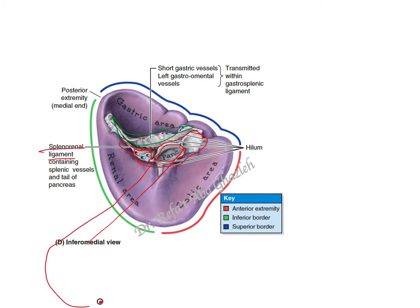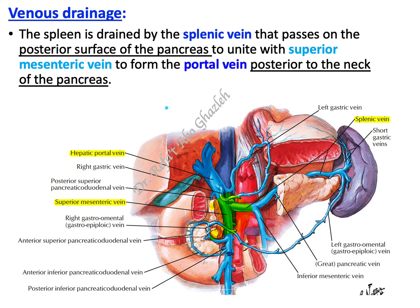This is the tail of the pancreas, this is the body, and so forth. So the splenic vessels and the tail of the pancreas are contained within the splenorenal ligament.